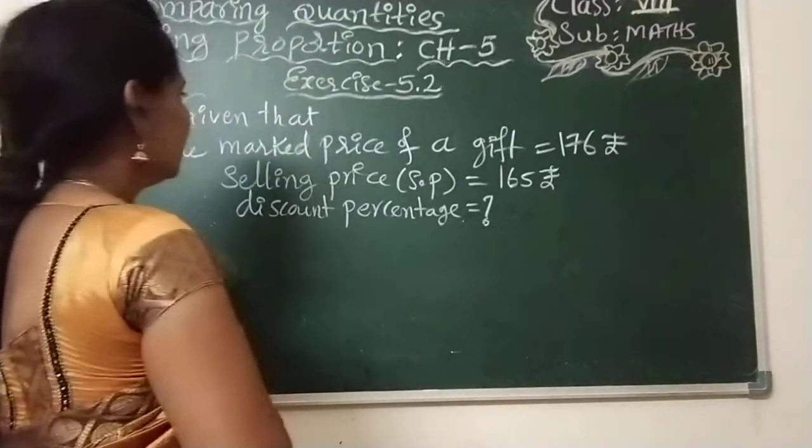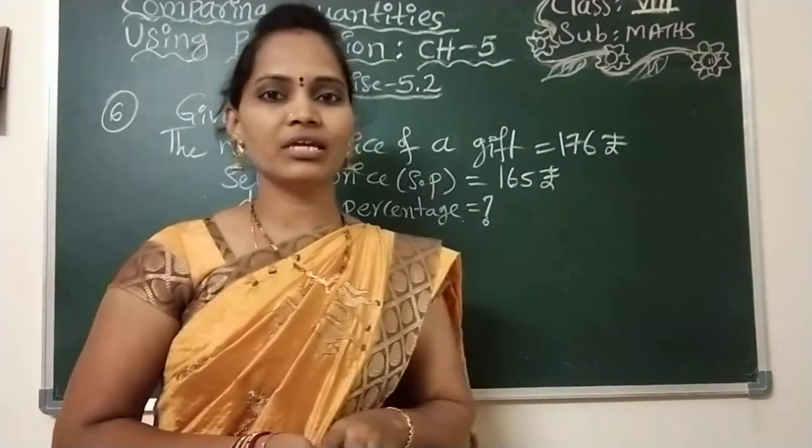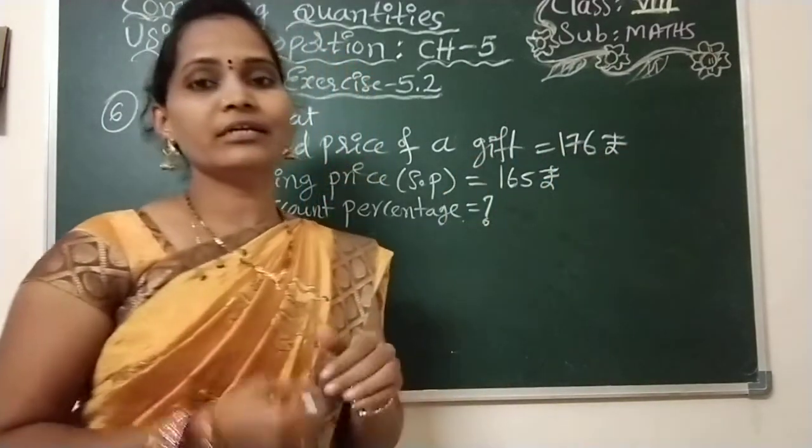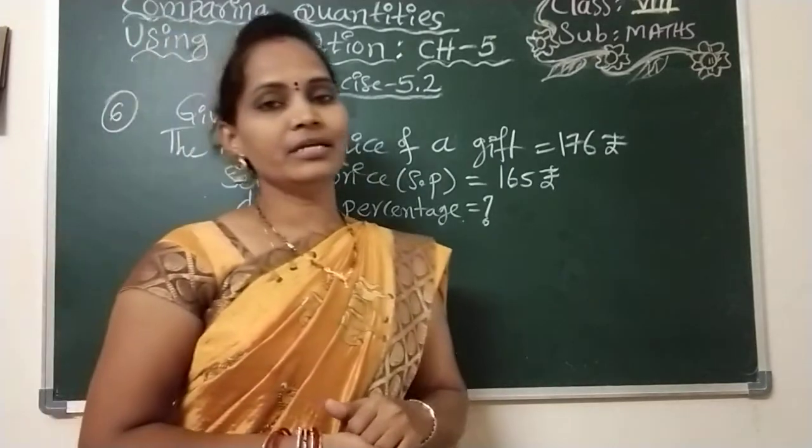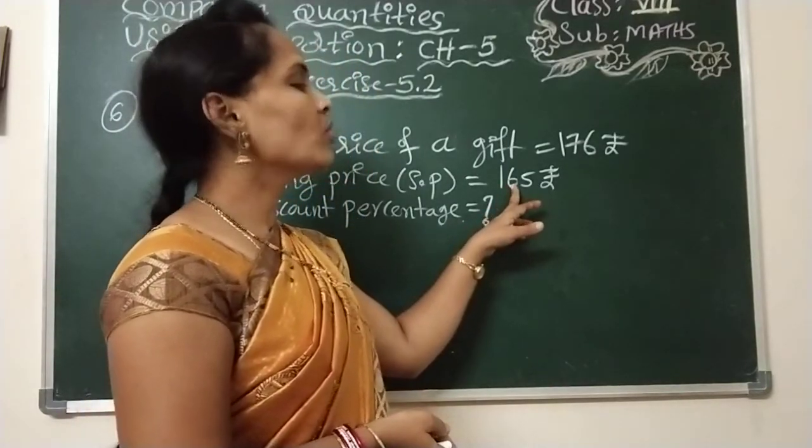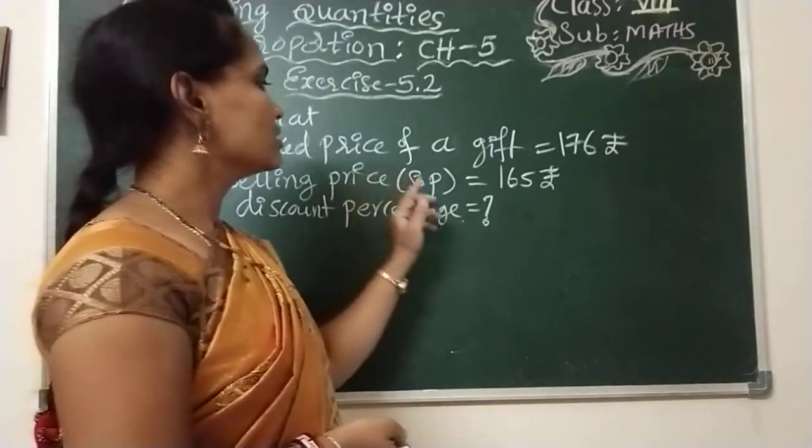Now coming to the question. The sixth question is: given that the marked price of a gift item is 176 rupees and that gift item is sold for 165 rupees. Sold means selling price, so selling price is 165 rupees.